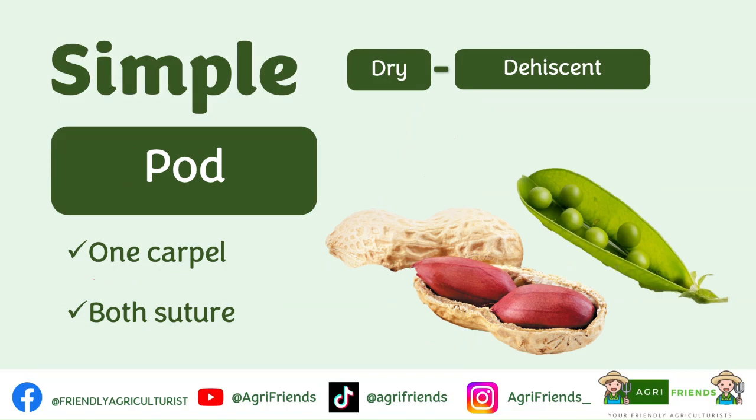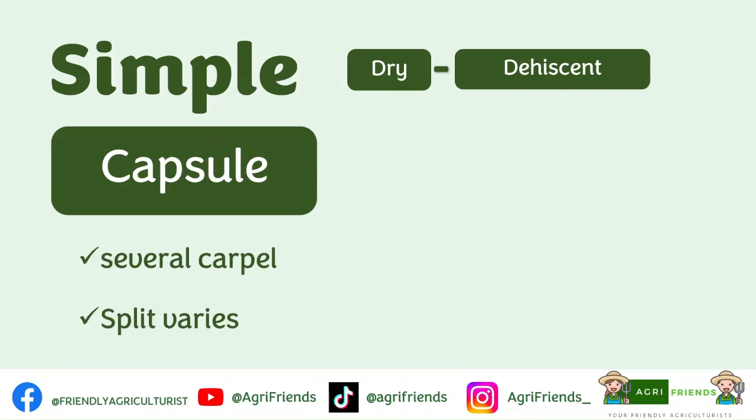A pod or legume is similar to a follicle — it also develops from one carpel — but at maturity it splits along both the dorsal and the ventral suture, meaning the fruit opens completely and can be separated into two, as in peanuts and peas. A capsule, on the other hand, is made up of several carpels that can either be fused (syncarpous) or unfused (apocarpous).